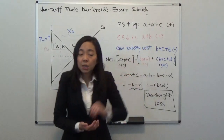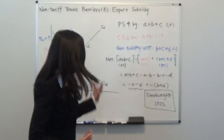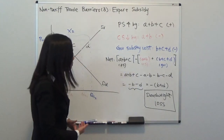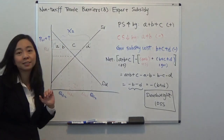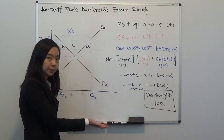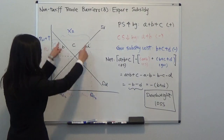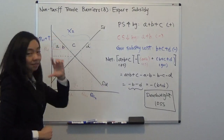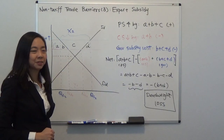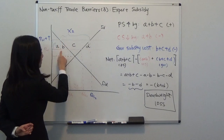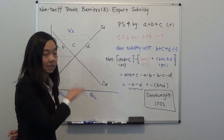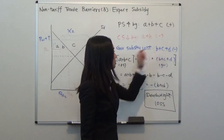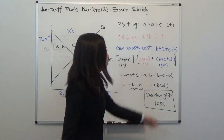What about the government subsidy cost? The government will have to pay the subsidy to domestic producers when they export — T dollars for each unit exported. We know the export is now X2, and for each unit exported the government is paying T dollars. So the subsidy cost is exactly the block B plus C plus D. And remember the subsidy is not free — taxpayers will have to pay for it. So B plus C plus D is the government subsidy cost, which is a negative.